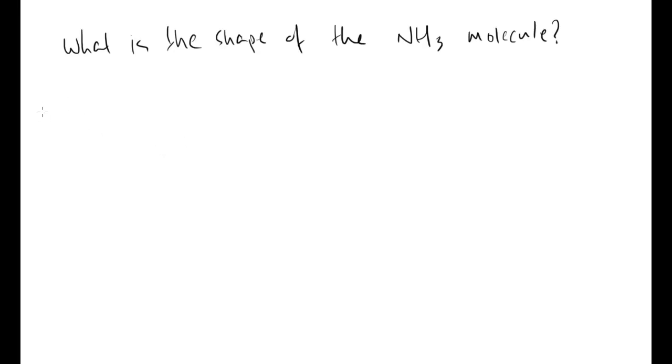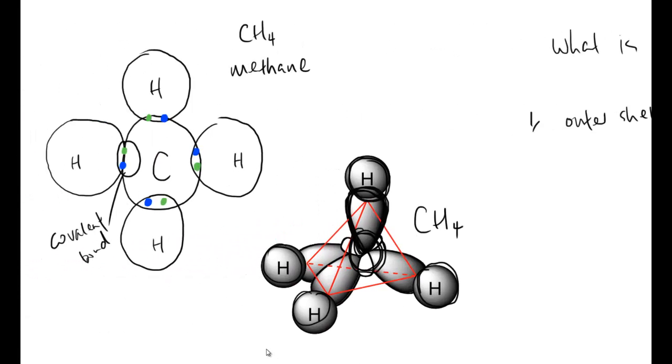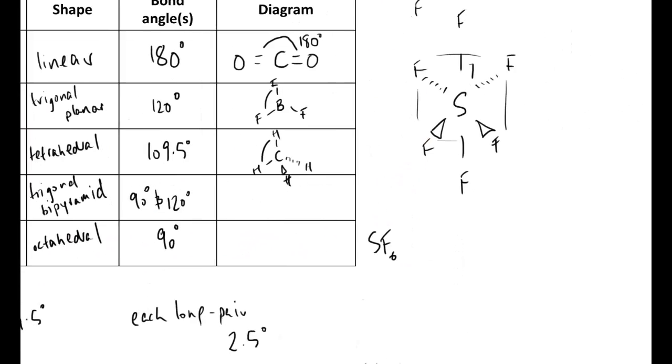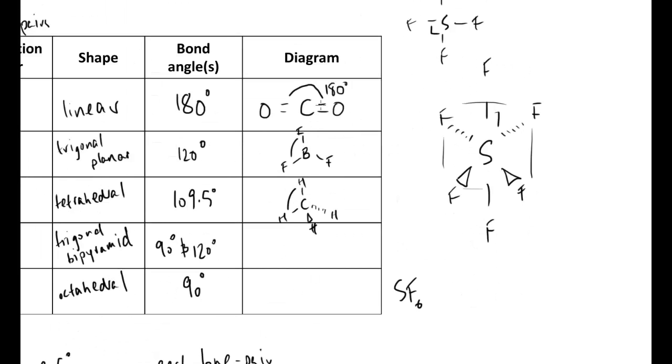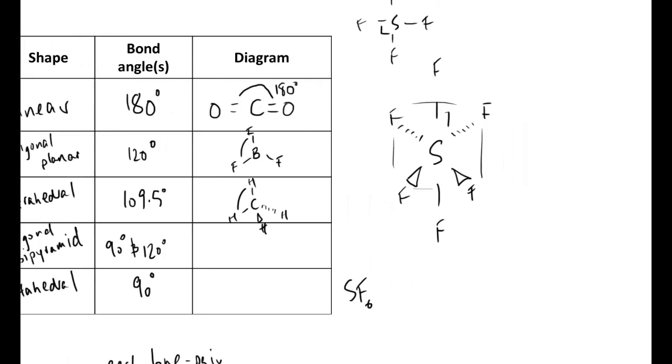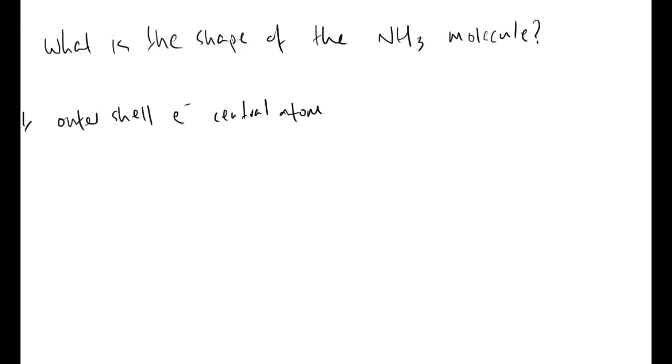So the five steps, and we're going to apply this to the ammonia molecule. One, count the number of the outer shell electrons of the central atom. Now, to know which one is going to be the central atom, it's going to be the one that is just one. So if you imagine all the shapes, you'll see that no matter what the shape is, there's always a central point, there's always a central atom, which they all then go from. So it's that atom within the molecular formula that is on its own. In this case, obviously, we've got nitrogen.